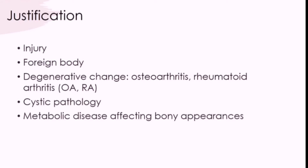Foreign bodies are also a common reason — glass is quite common, or needles or metal within the hand. We also look at things like osteoarthritis and rheumatoid arthritis, degenerative changes, cystic pathology where part of the bone is destroyed giving little holes or cysts within the bones, metabolic diseases affecting bony appearances, and delayed growth in children where we look for bone age using hand x-rays.